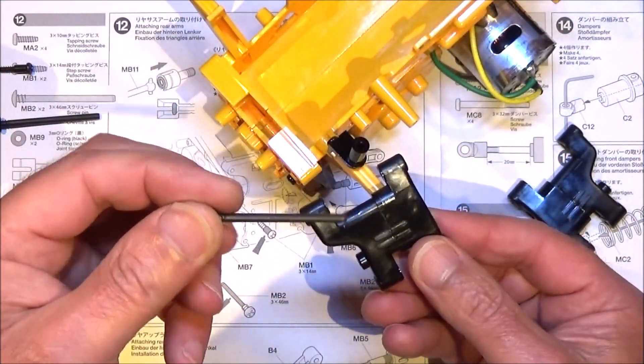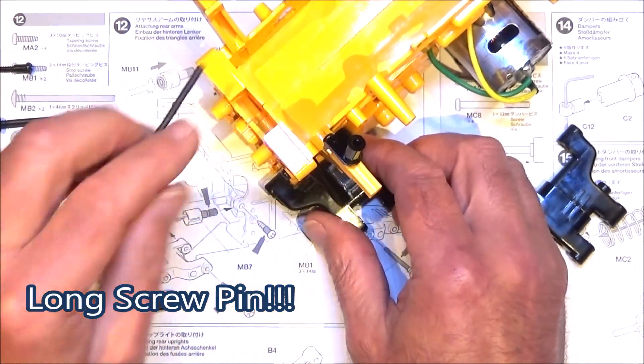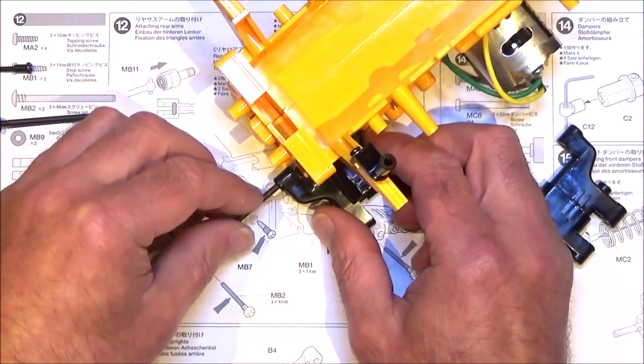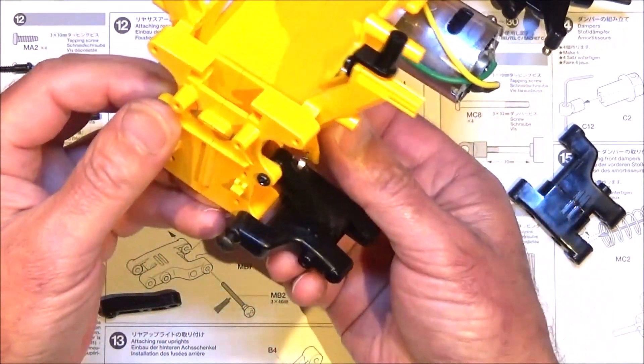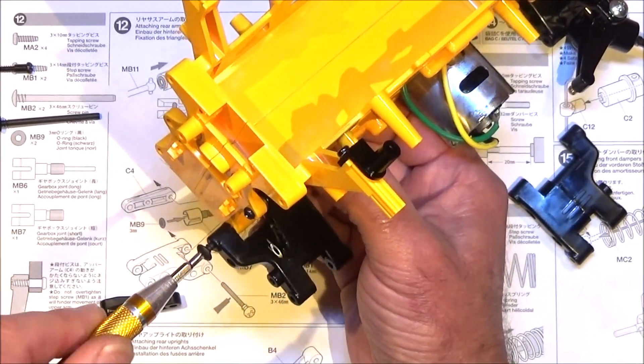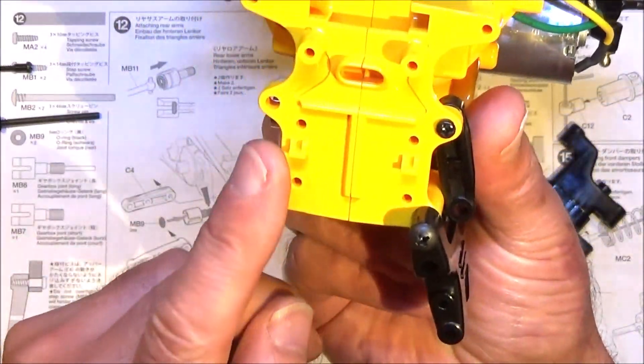Then get your lower arm and the long step screw you've got left there - should only be two left now. Obviously this goes into the bottom mount. Like that and then repeat for the other side. With both sides done, that's the end of step 12.